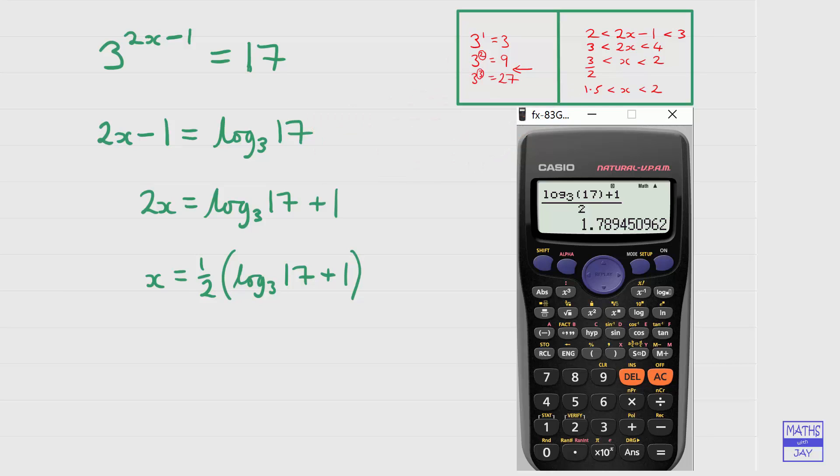So equals gives us 1.789450962 and so on. Rounding that to three significant figures gives us 1.79.